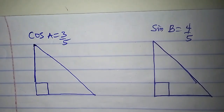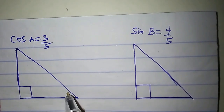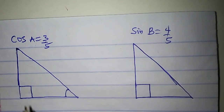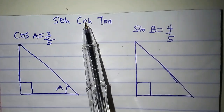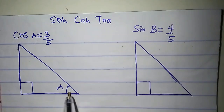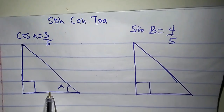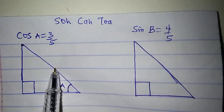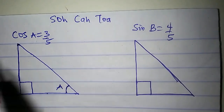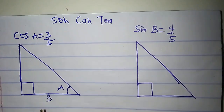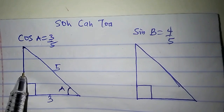Watch how I'm going to get the other ratios. Cos A is 3 over 5, so I can place my angle A in the triangle. Cos is adjacent over hypotenuse. If this is where A is, the adjacent is 3 and the hypotenuse is 5. I need to get the opposite side.